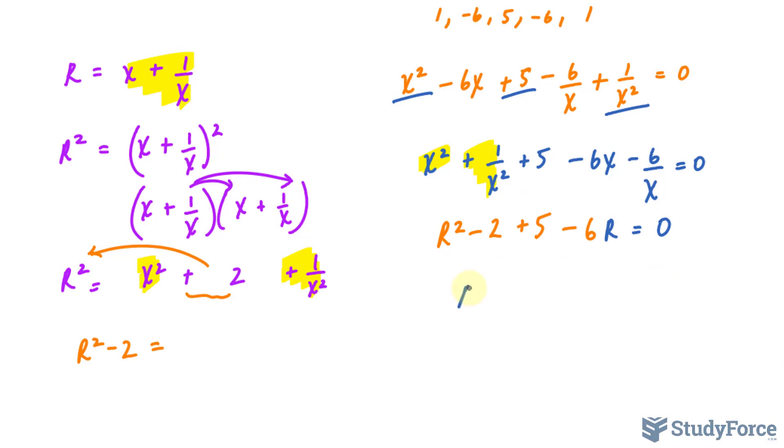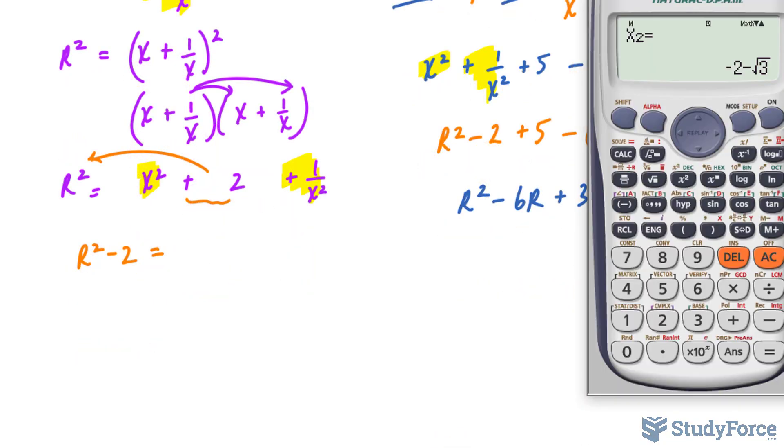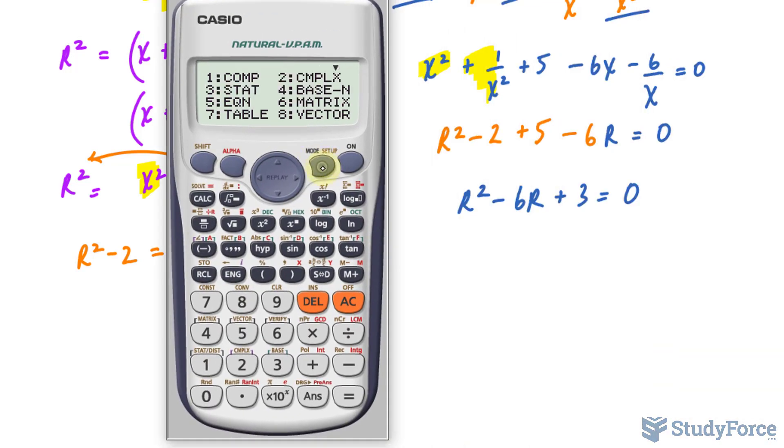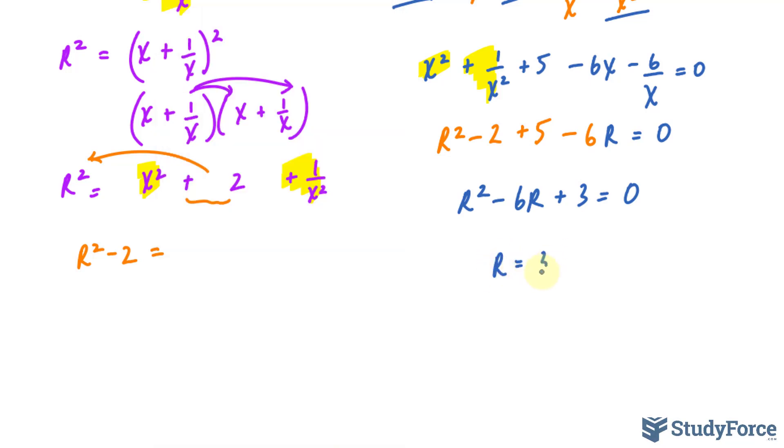We now have a quadratic equation: r² - 6r + 3 = 0. Quadratics can be solved using the quadratic formula. I'll use my calculator to expedite the process. With coefficients a=1, b=-6, and c=3, we get two values for r: r = 3 + √6 and r = 3 - √6.